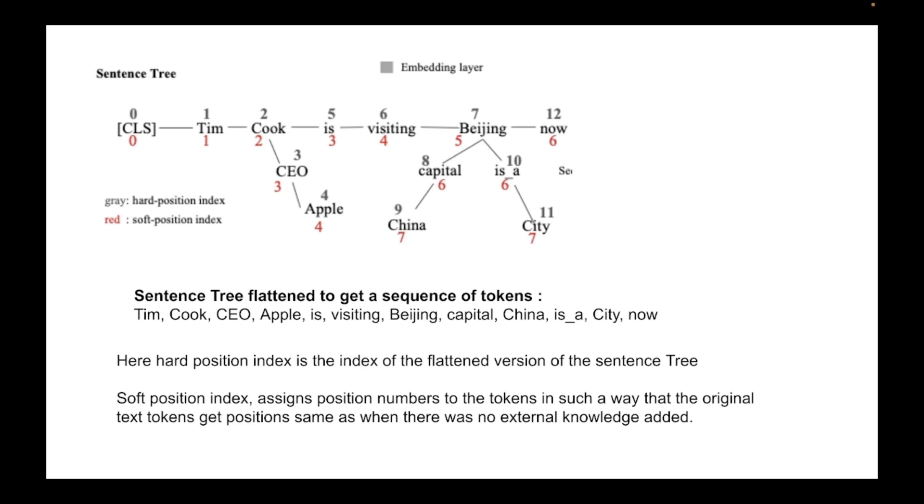In K-BERT, the position indices assigned to different tokens are done in a slightly different manner. Here they introduce something called hard position index and soft position index. Hard position indices are normal positional indices of the flattened out version of the sentence tree. So it starts with zero on the left with CLS token and it increments as we go right and explore each branch of the sentence tree. So you can see zero, one, two, three, four, and then five, six, seven, eight, nine, ten, eleven, twelve. It's in that format, the same way we traverse the sentence tree to get the flattened out version.